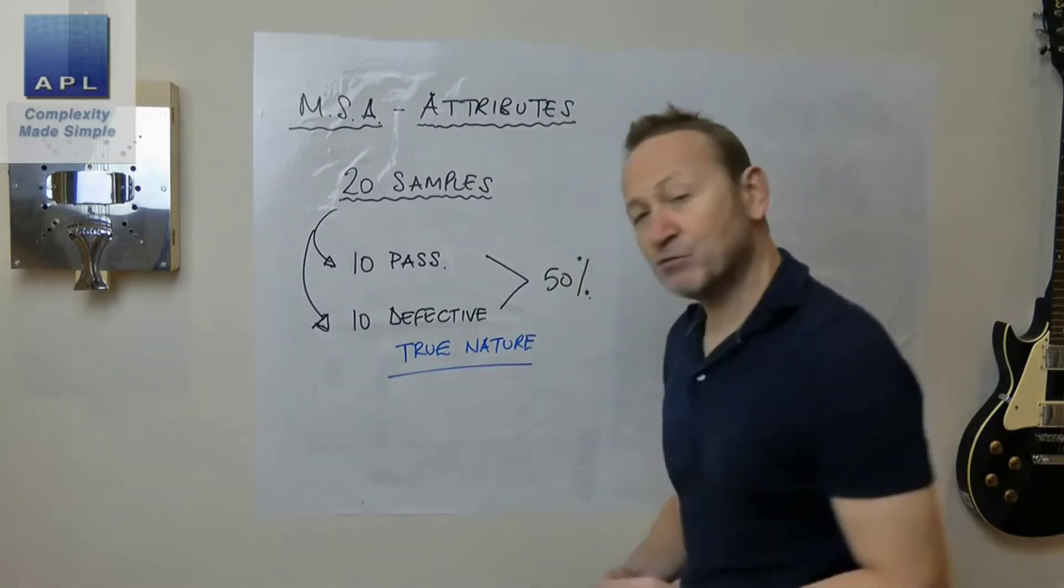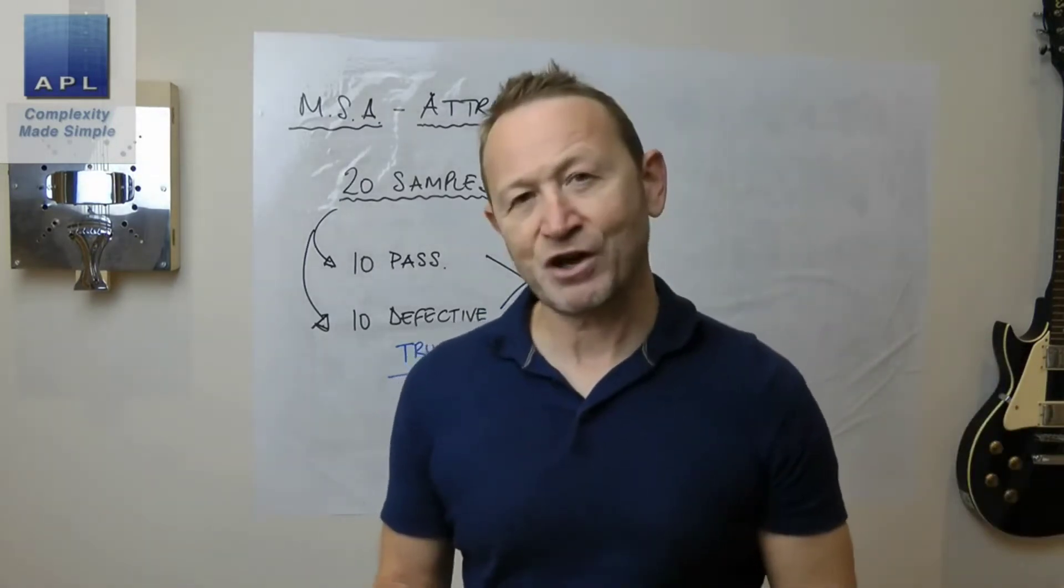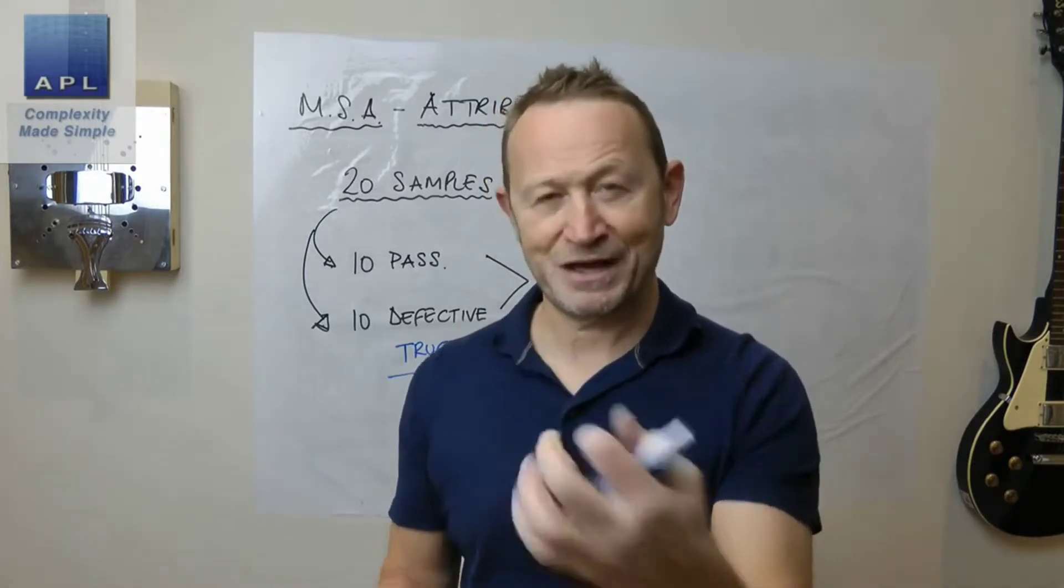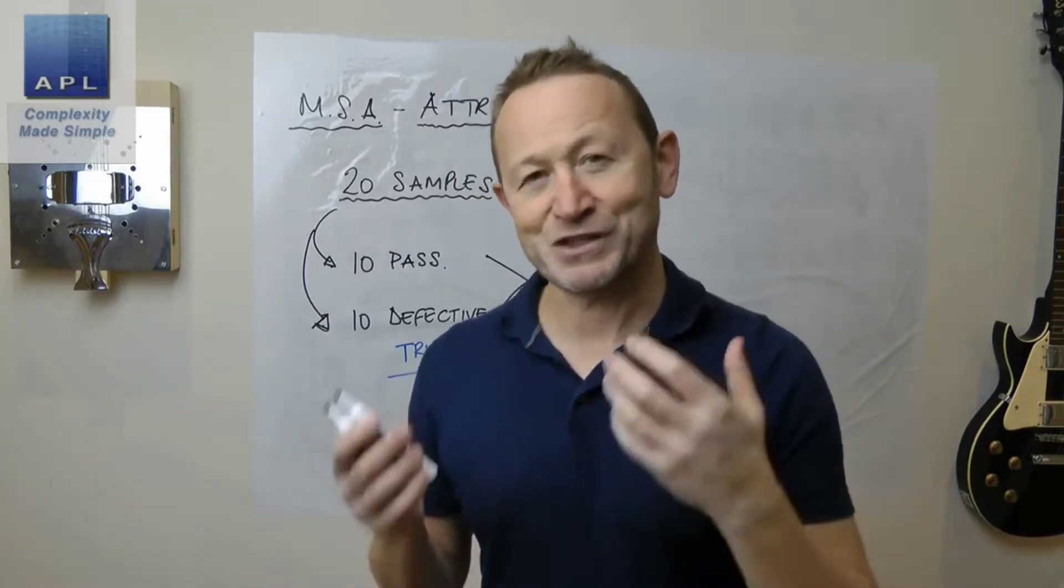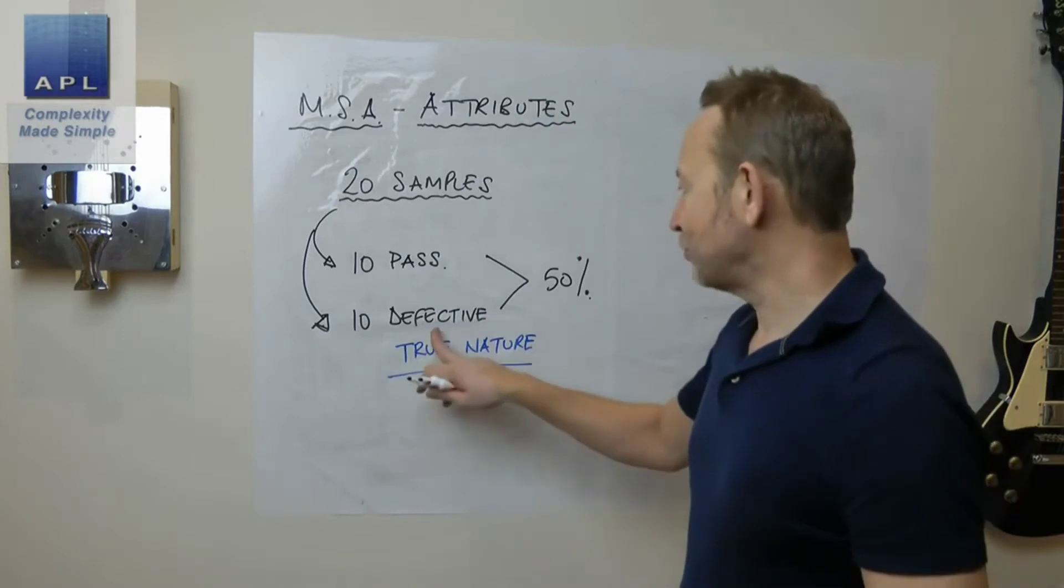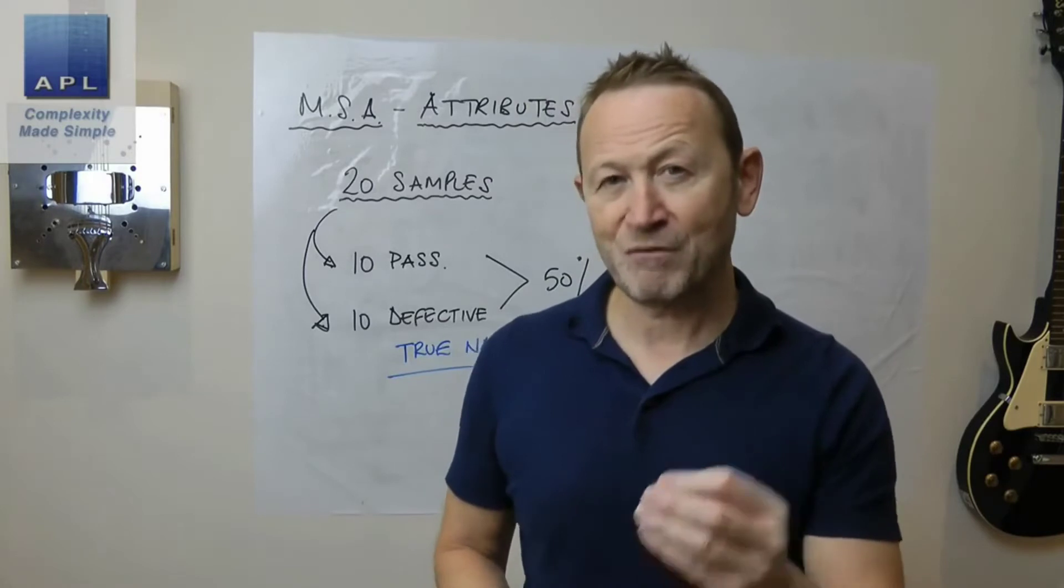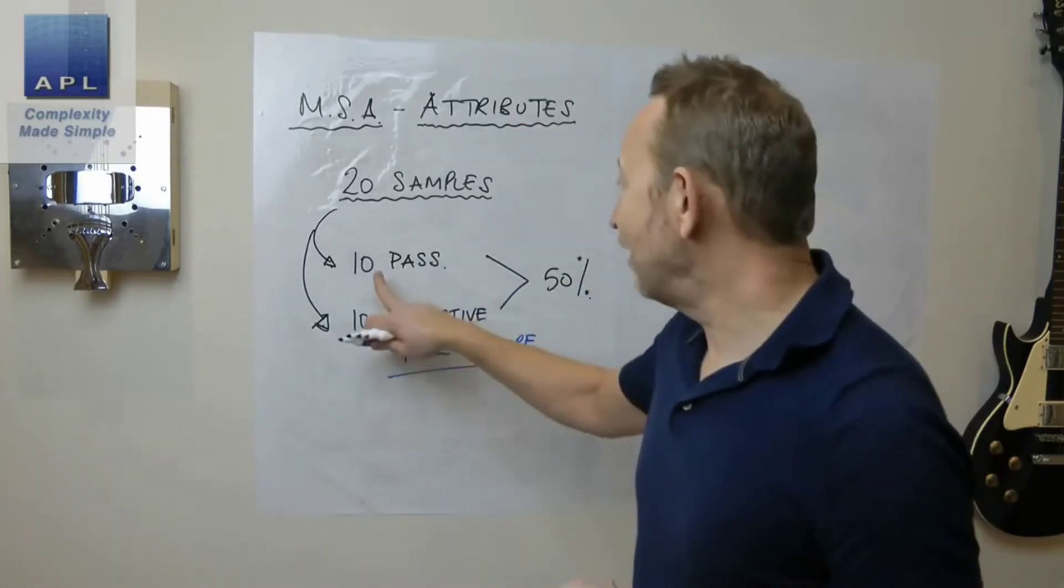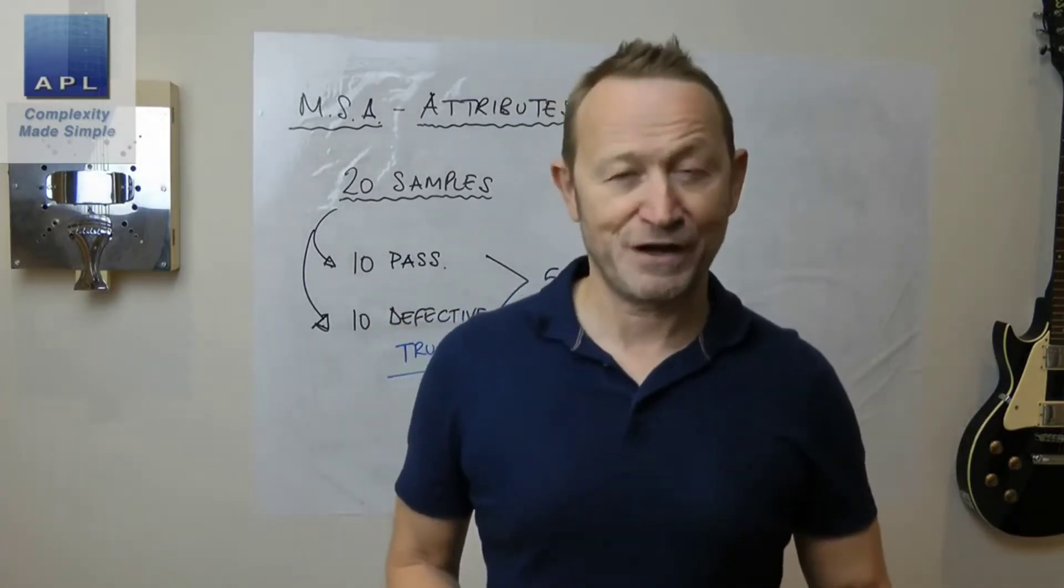That's not something that we do in variable MSA. There is no real size for a part, and if I hold a metallic part in my hands then the size will change, so in a sense there is no real size when you're working on variable data. But there is a real state for these parts, so someone in the company has to be the holder of the standard and they've assessed the 10 that pass and the 10 that fail.